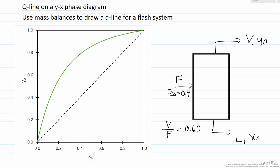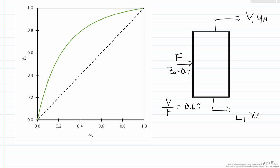So to draw the Q-line, what we're going to do is write down mass balances. One is pretty simple, the vapor plus the liquid must equal the feed. However much we're feeding in has to come out as either vapor or liquid. That's an overall mass balance.